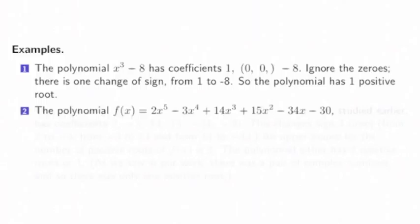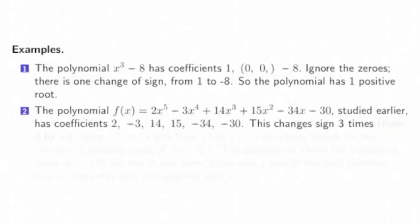The polynomial 2x⁵ - 3x⁴ + 14x³ + 15x² - 34x - 30, studied earlier, has coefficients 2, -3, 14, 15, -34, -30. This changes sign three times, from 2 to -3, positive and negative, and then from -3 to 14, negative back to positive, and then from 15 to -34.